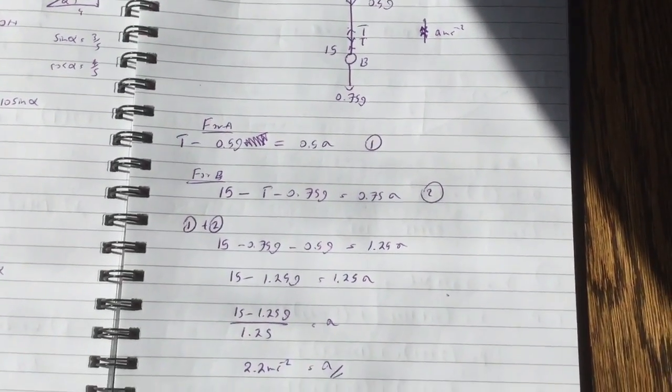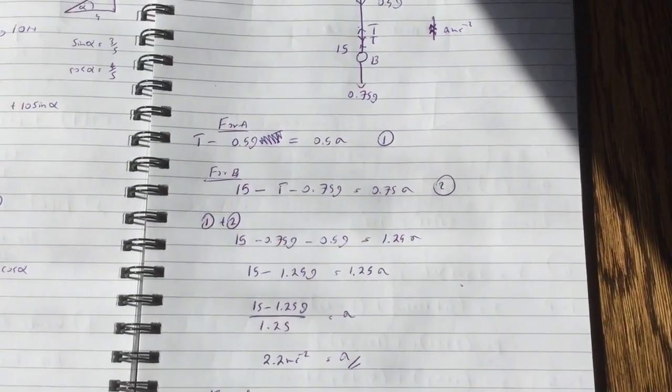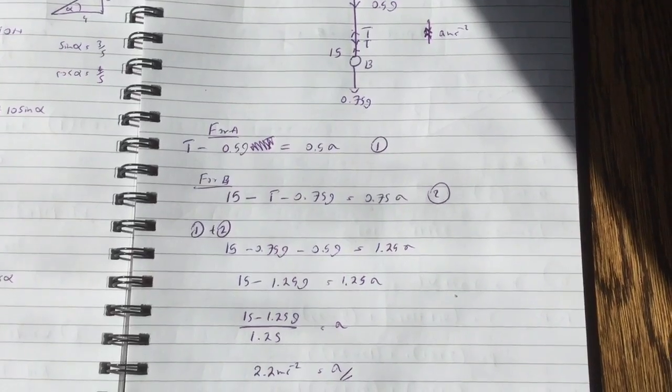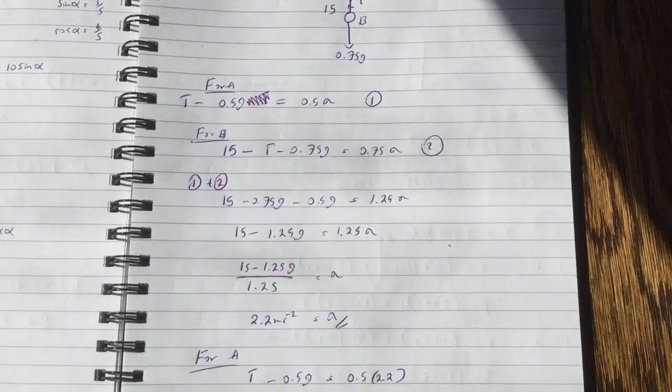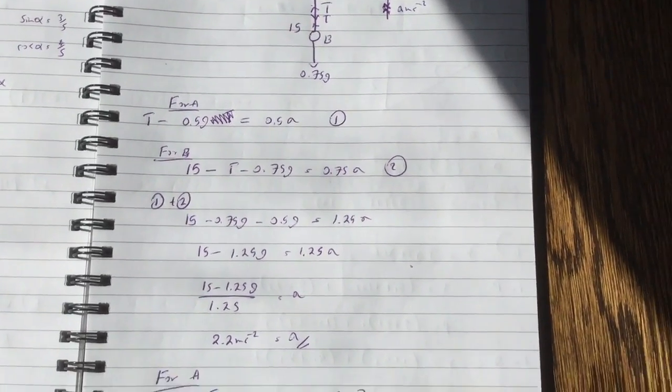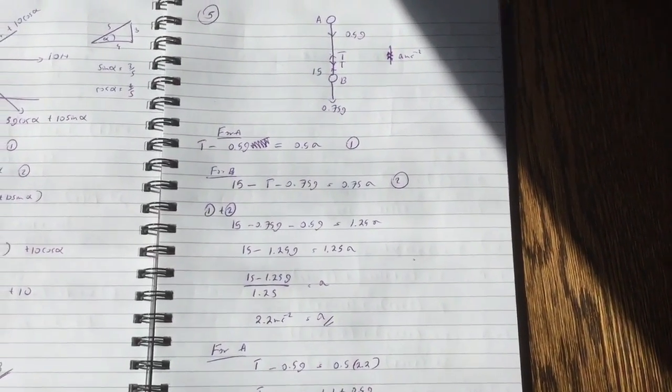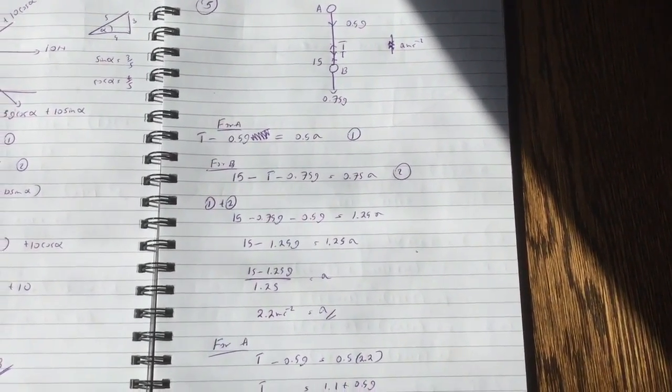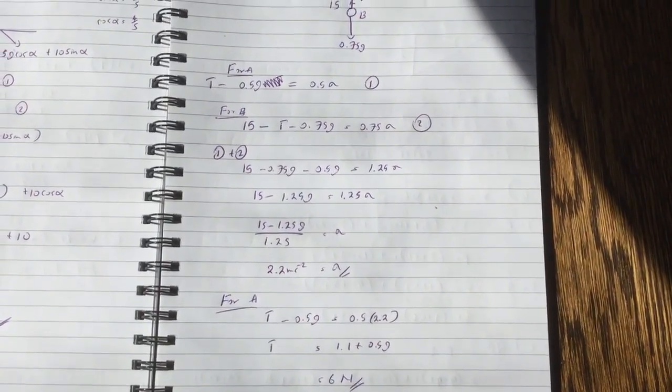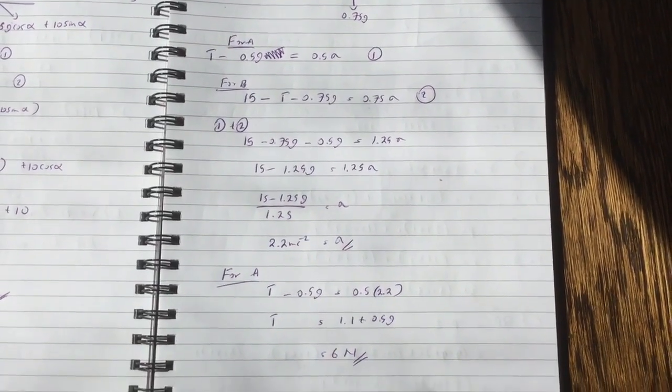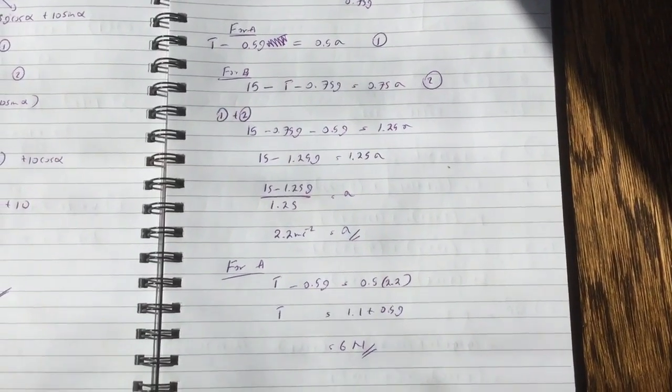So you solve the two equations and you add them. So the T's cancel, so you end up getting an equation in terms of acceleration only. And if you simplify that down, you get acceleration equals 2.2 meters per second. And then if you take particle A only, so particle A has two forces acting, thrust going upwards and the weight going downwards. So T minus 0.5g equals 0.5 times 2.2. So T equals 1.1 plus 0.5g which is 6 newtons.